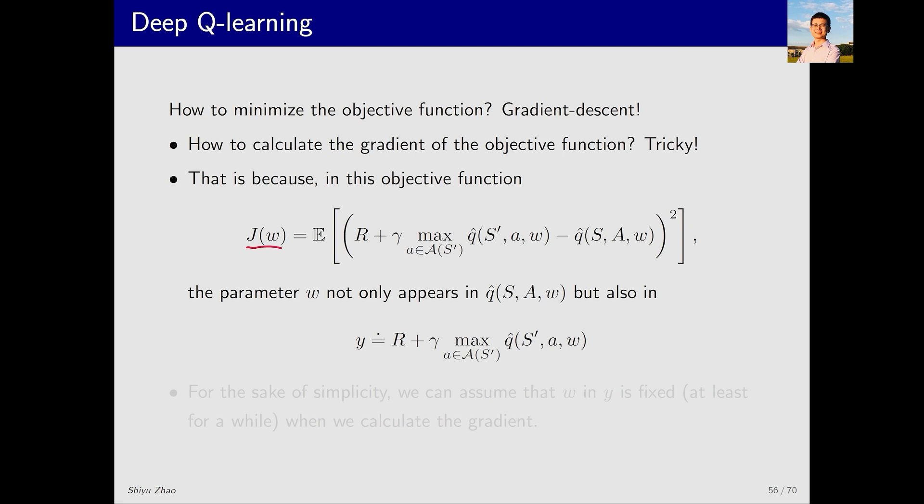But W appears in two places, one here and the other here. Computing the gradient with respect to this W is relatively straightforward. It's the gradient of Q hat. However, this is a bit more complex. So what does deep Q-learning do to solve this problem?